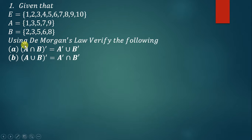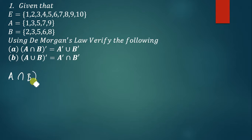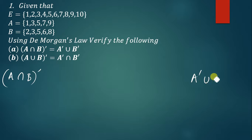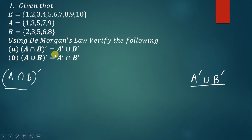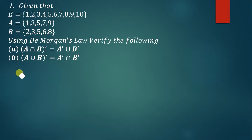The first thing you need to do is find the left hand side. On the left we have (A∩B)', so we are going to find this, and then we'll also find A'∪B'. If we get the same answers on both sides, then we know that the first De Morgan's Law is correct. So let us start with (A∩B)'.